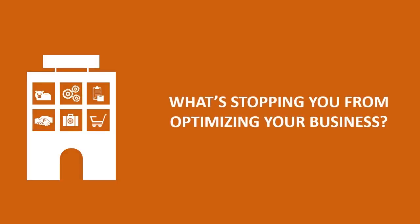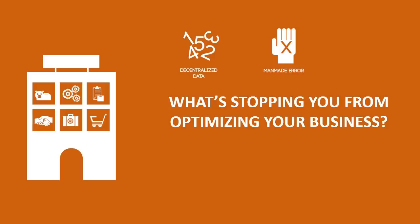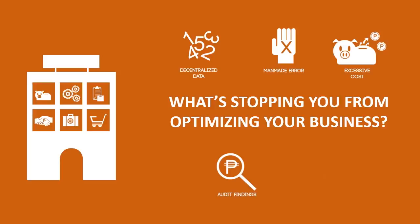You've got the basics covered, but what's stopping you from optimizing your business? The usual impediments that businesses face are data decentralization, which results in outdated information; man-made error, which is usually prone to inaccuracy; excessive spending, which affects a company's profit margin; inaccurate audit findings that are susceptible to tax interrogations; and the presence of business disruptions that interrupt business continuity and stability.